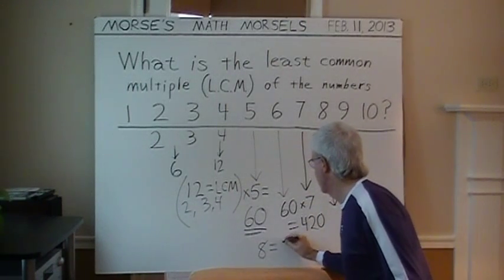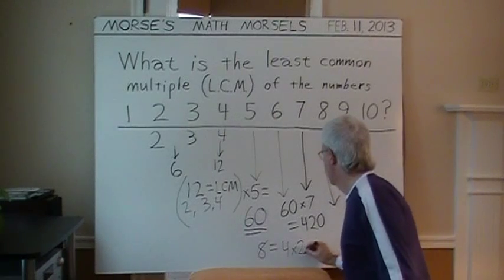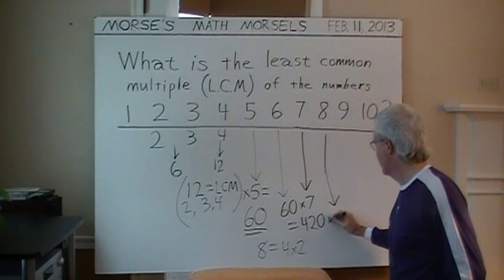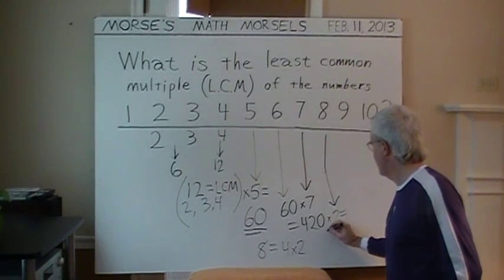And 8 equals 4 times 2. Make a little notation here. All we need is another factor of 2. Multiply 420 by 2. And that gives 840.